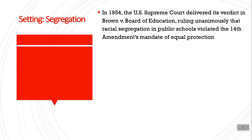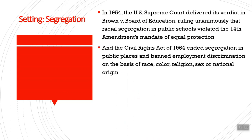In 1954 — 10 years before our play takes place — the Supreme Court delivered its verdict in Brown v. the Board of Education. They ruled unanimously that racial segregation in public schools violated the 14th Amendment, which granted equal protection to all citizens. They banned segregation. The problem was there were no rules or laws in place to enforce this ruling, so it was on the books but didn't really have any effect.